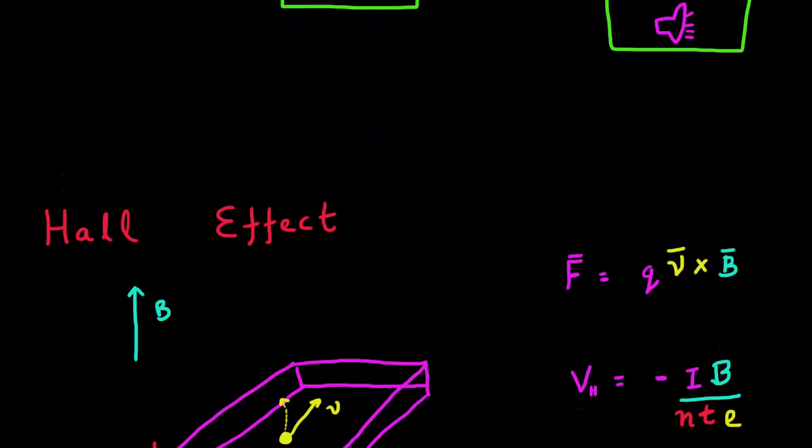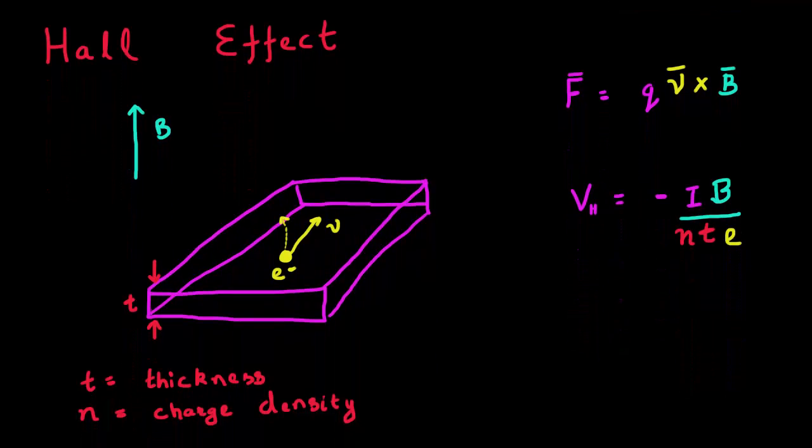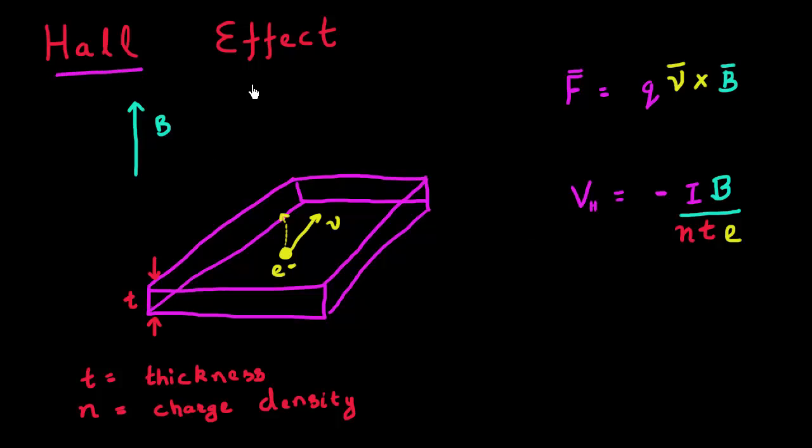So now how does the Hall effect work and how is it leveraged inside these sensors? Hall effect, as you might recall from your high school physics, says that whenever you have current flowing through this slab and when you subject that to a magnetic field, it results in development of this Hall voltage which is perpendicular to both the direction of the current and the magnetic field. Its magnitude is proportional to the magnetic field and proportional to the amount of current that you're flowing. The underlying physics behind that is the Lorentz force.